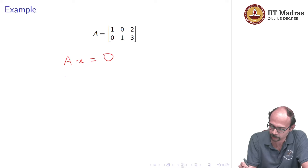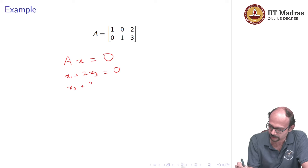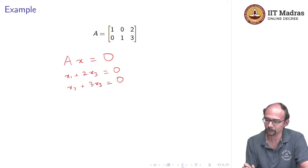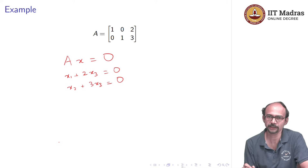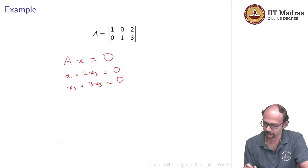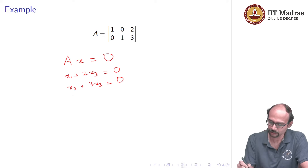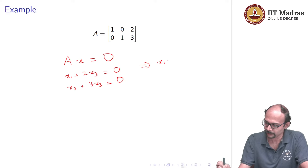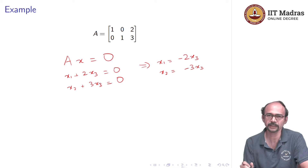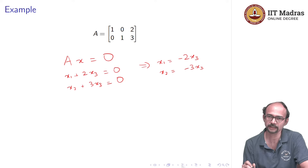The corresponding equations are x1 + 2x3 = 0 and x2 + 3x3 = 0. There is not really much we can do to manipulate this, and the reason is that we can have many, many solutions. From these equations, x1 = −2x3 and x2 = −3x3, and that is all we need to get a solution.